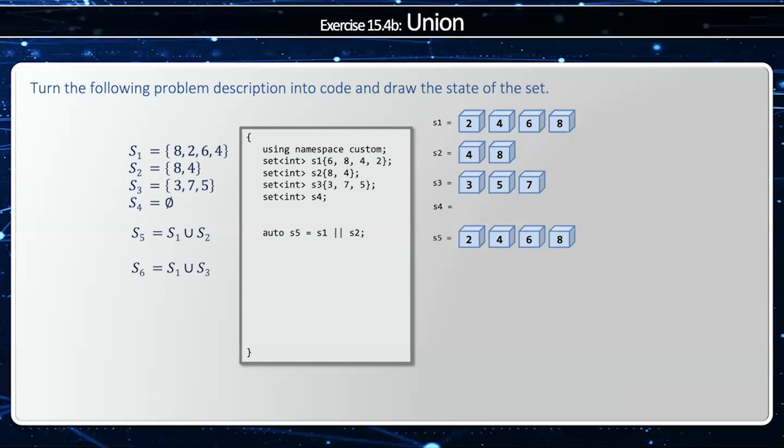Now, I'm going to say S6 equals S1 union S3. Now, these are disjoint. 3, 5, and 7 is not in 2, 4, 6, 8. And so therefore, my S1 union S3 is going to be 2, 3, 4, 5, 6, 7, 8 is going to be much bigger.